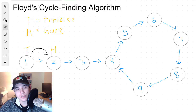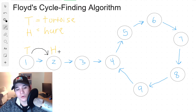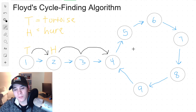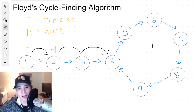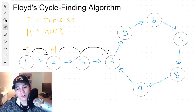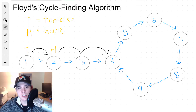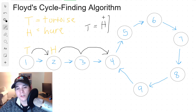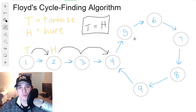The tortoise will move to node 2, but the hare, since it's a faster animal, moves two steps. So the hare starting from node 2 will move to node 4, because it took two jumps. You can imagine that if there is a cycle in this path, eventually the hare is going to lap the tortoise because they're just going around in a circle. Our exit condition for finding a cycle is if T is equal to H — if the tortoise equals the hare, we found a cycle.